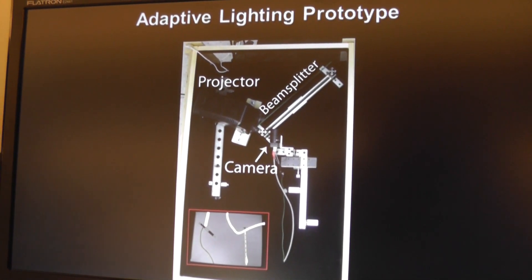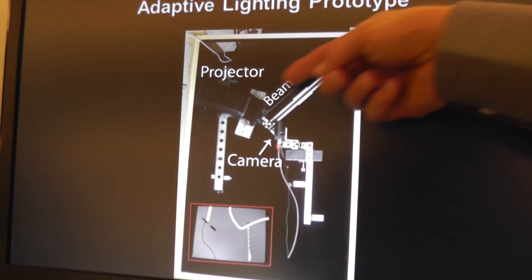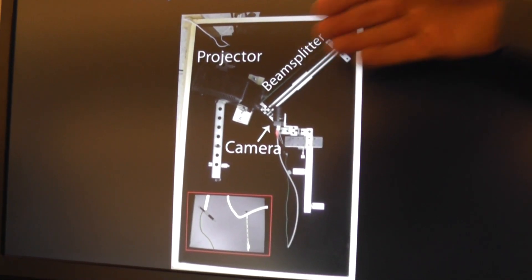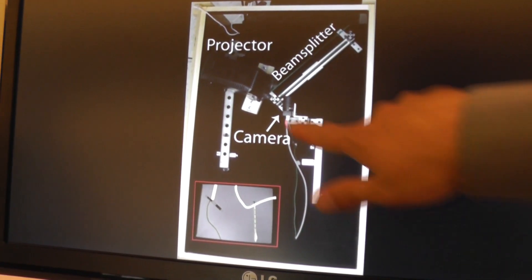This is a picture of our prototype. We have the projector and the beam splitter that's reflecting the light from those raindrops into the camera.